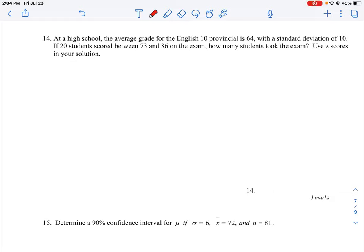Let's take a look at question number 14. What we're given here is the average grade for an exam, which is 64, and it has a standard deviation of 10. And then it says if 20 students scored between 73 and 86 on the exam, how many students actually took the exam in total?